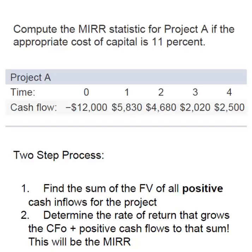We're going to use the BA II Plus calculator to compute this, and it becomes a two-step process. We're going to find the future value of all of those positive cash flows and sum them up, and then we're going to determine the rate of return that grows that initial outflow to the future value of the positive cash flows — and that is going to be our MIRR.